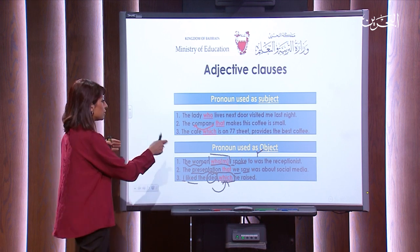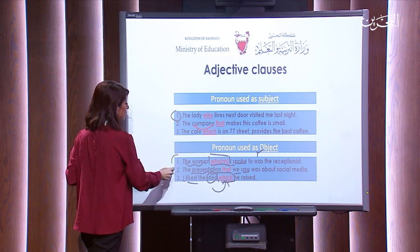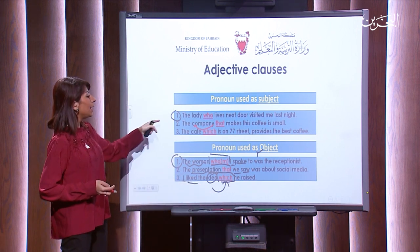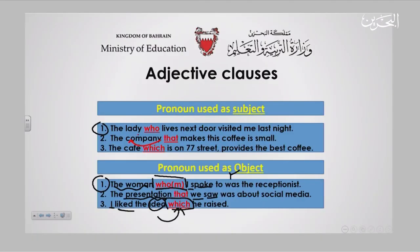Let me clarify once more. 'The lady who...' — the lady is the subject, so I use 'who.' 'The woman whom I spoke to' — the woman is the object, so I use 'whom.' You simply need to know which one is the subject and which is the object, and then you can determine whether to use 'who' or 'whom.'